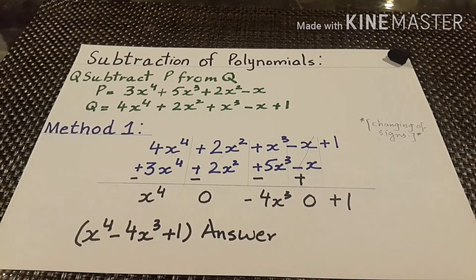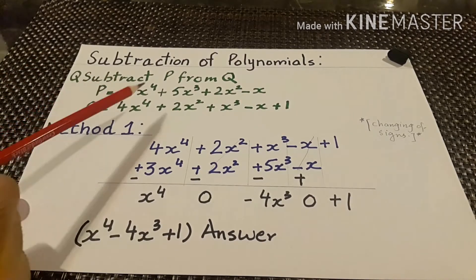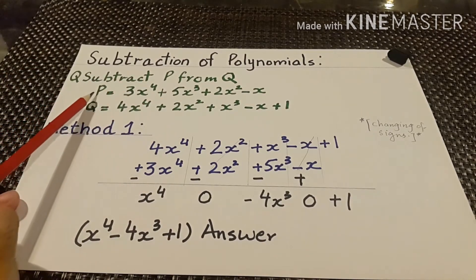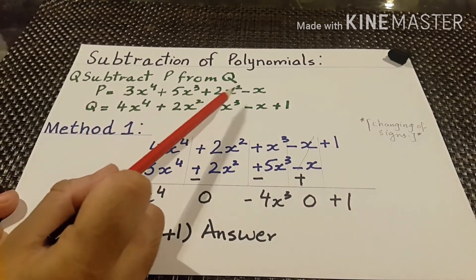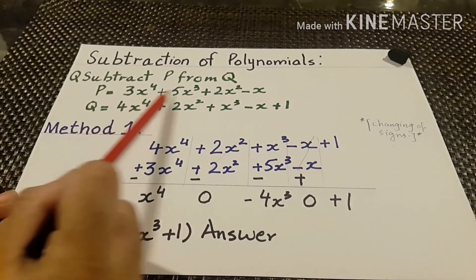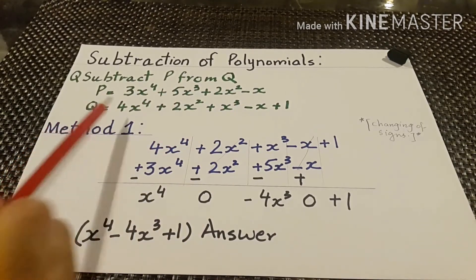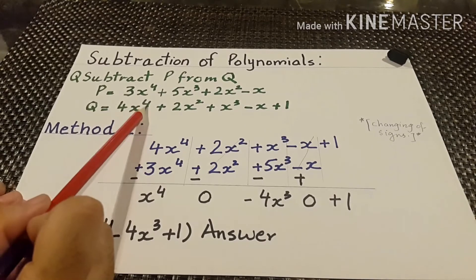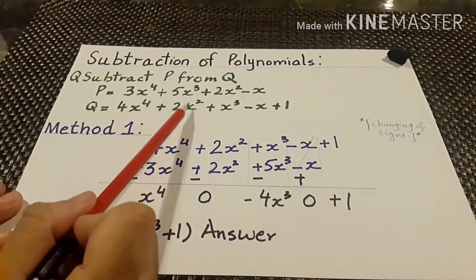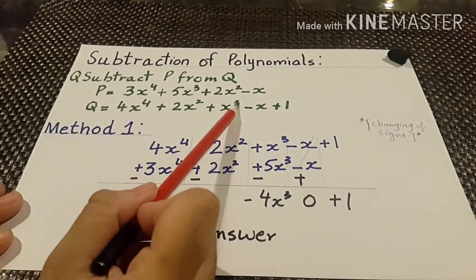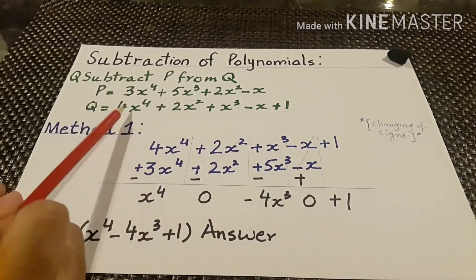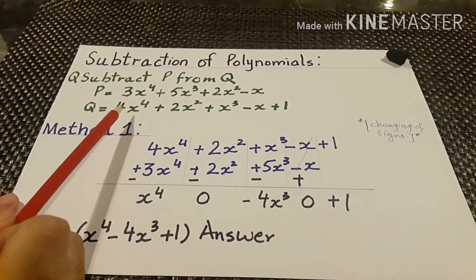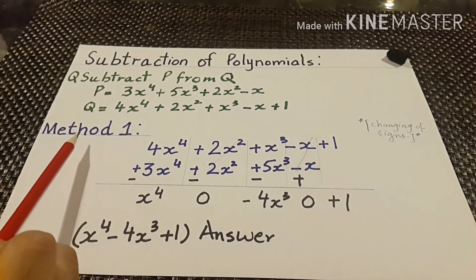Now the topic is subtraction of polynomials. The question is: subtract p from q. The values of p are: 3x squared plus 5x cubed plus 2x squared minus x — this is a polynomial of degree 4. And q equals 4x to the power 4 plus 2x squared plus x cubed minus x plus 1, also a polynomial of degree 4.